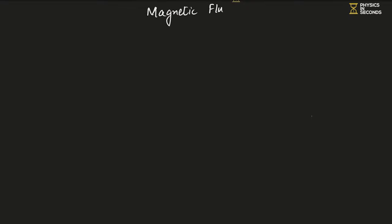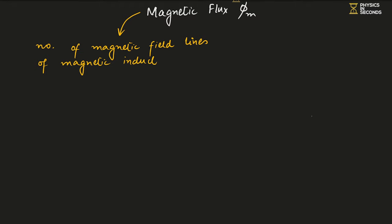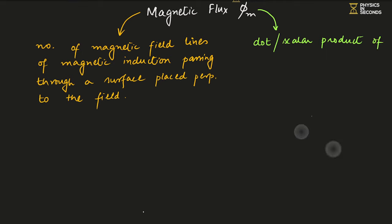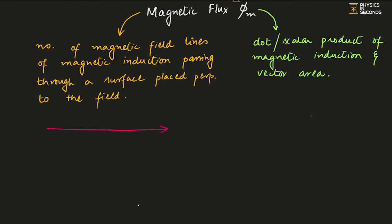Magnetic Flux is defined as the number of magnetic field lines of magnetic induction passing through a surface placed perpendicular to the magnetic field. It is also defined as the dot (scalar) product of magnetic induction B and vector area A: Φ = B·A = BA cosθ. This can be taken as B times (A cosθ) — the component of A along B — or (B cosθ) times A — the component of B along the vector area.